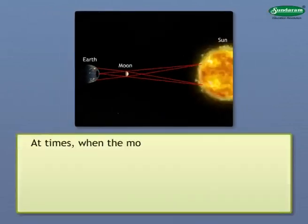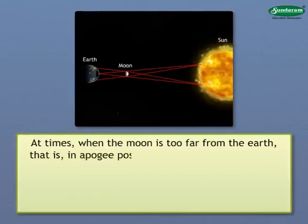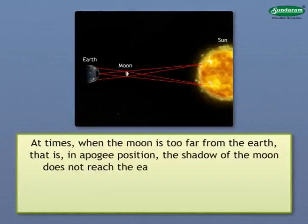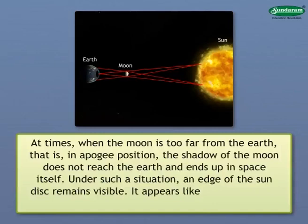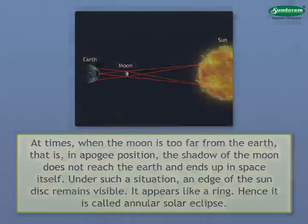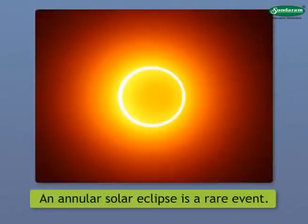At times, when the Moon is too far from the Earth, that is, in apogee position, the shadow of the Moon does not reach the Earth and ends up in space itself. Under such a situation, an edge of the Sun disk remains visible. It appears like a ring. Hence, it is called annular solar eclipse. However, an annular solar eclipse is a rare event.